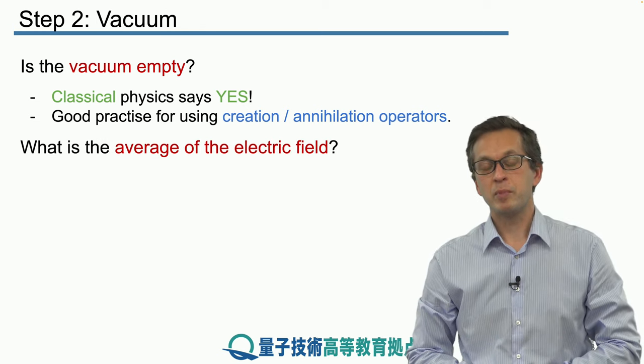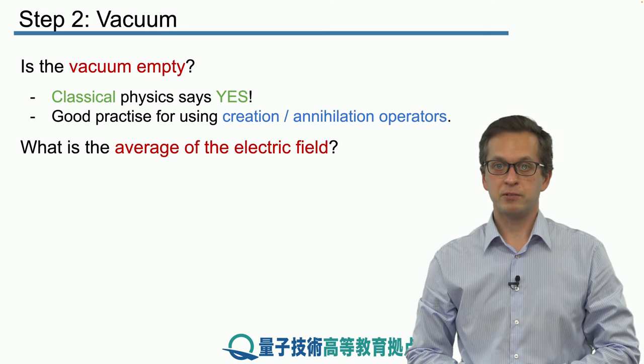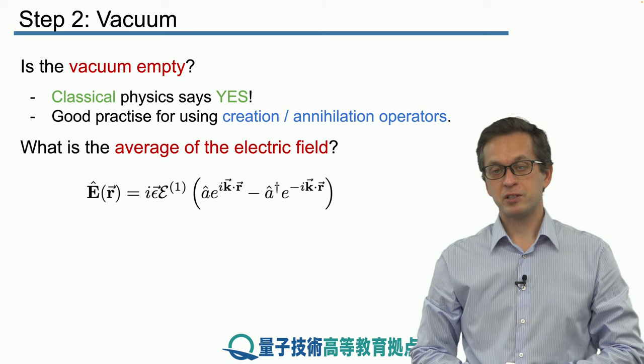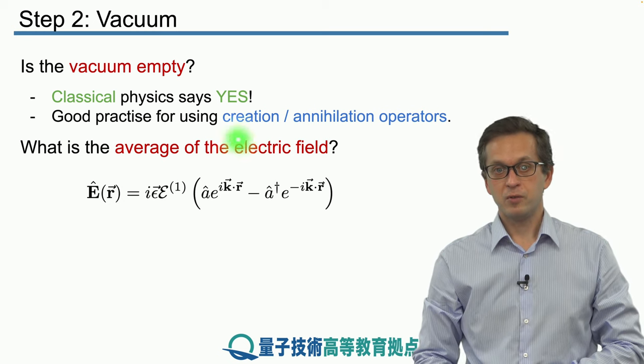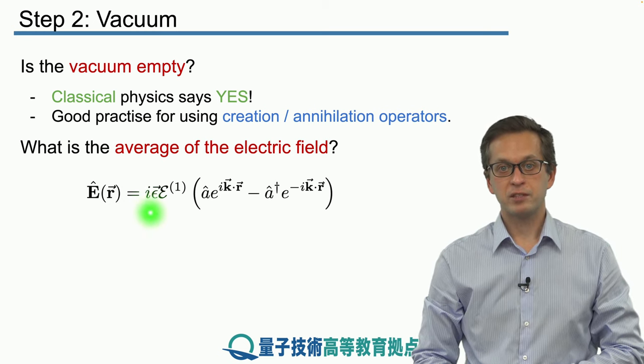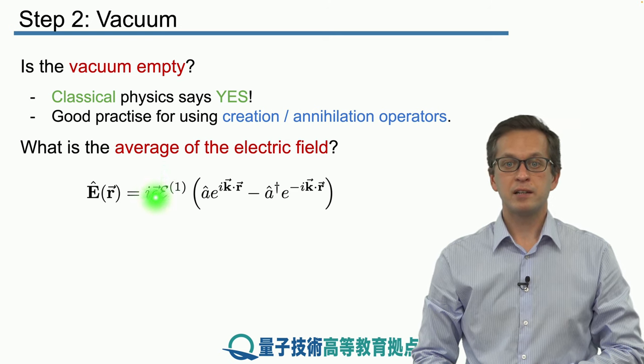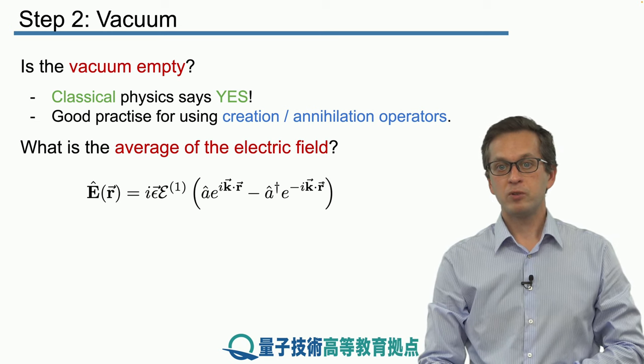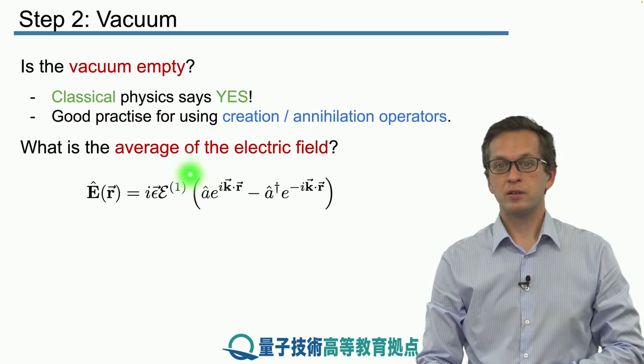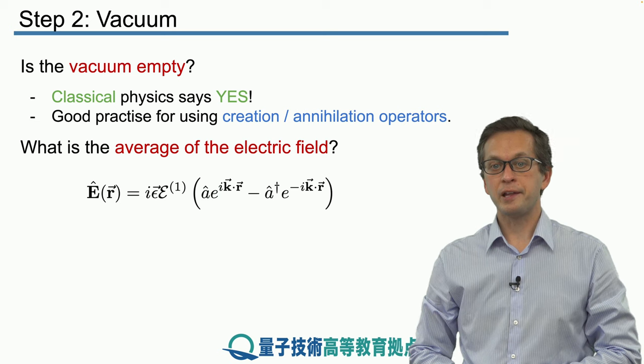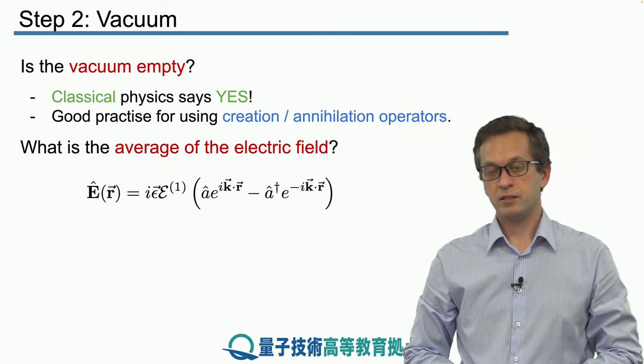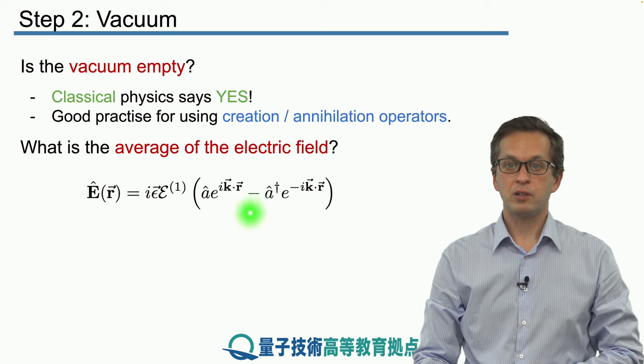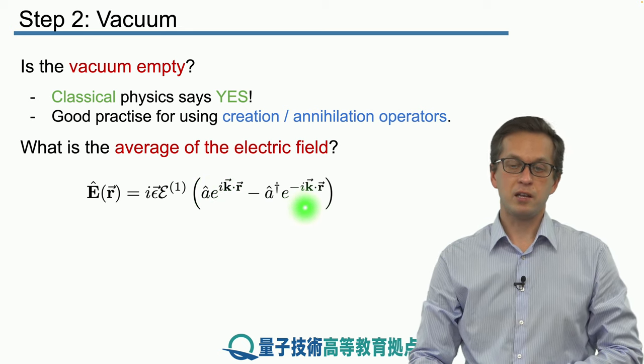So let's begin by computing what's the average of the electric field when the state of the field is in vacuum. Here's an expression for our electric field: we've got i times the polarization vector times the scalar E1, corresponding to one photon amplitude, and then this expression containing an annihilation operator and a creation operator with their corresponding exponentials i k dot r and minus i k dot r.